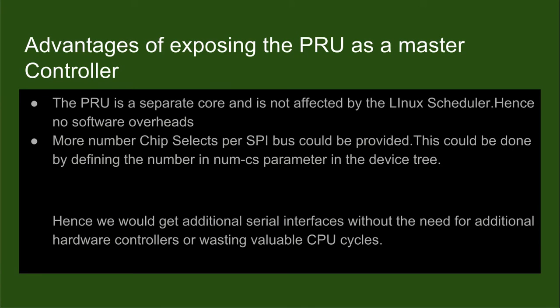Now let's look at the advantages of exposing the PRU as a master controller. The biggest advantage is that we would get more chip selects per SPI bus, and we could even get more SPI buses — this assumes paramount importance on an embedded platform like the BeagleBone. We would get additional serial interfaces without the need for additional hardware controllers or wasting valuable CPU cycles, because the PRU is a separate core and is not affected by the Linux scheduler, so there are no software overheads involved.